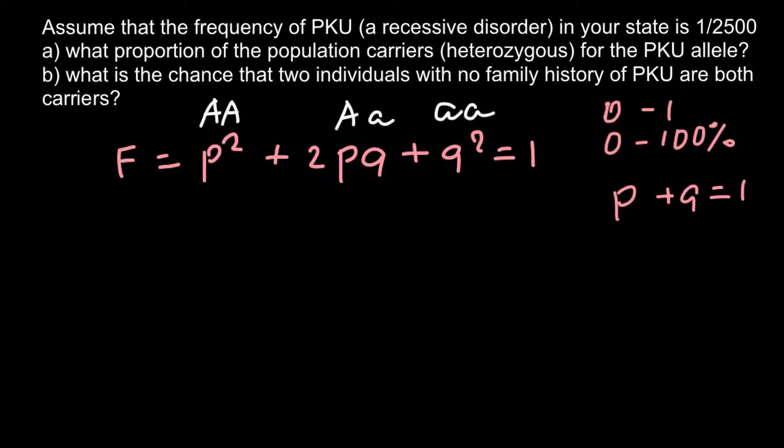Allele P stands for the dominant allele A, and Q stands for the recessive allele a. So as you see, these two alleles can make three different genotypes.